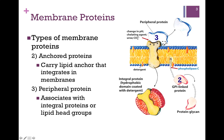You'll notice in this case, however, it only integrates on one of the monolayers. In the case of an integral membrane protein, it passes through the entire membrane, with regions on the inside as well as the outside. For an anchored protein, that anchor is only on one side, so the protein itself will either be facing inside or outside, depending on where that anchor lies.